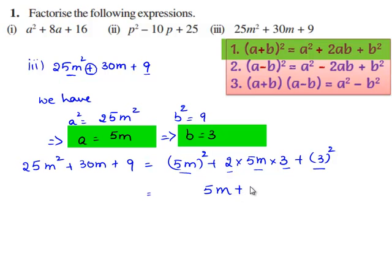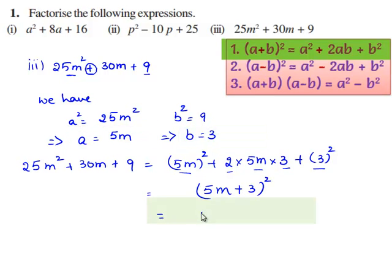That is, (5m + 3)², which equals (5m + 3)(5m + 3). These are the required factors of the given expression.